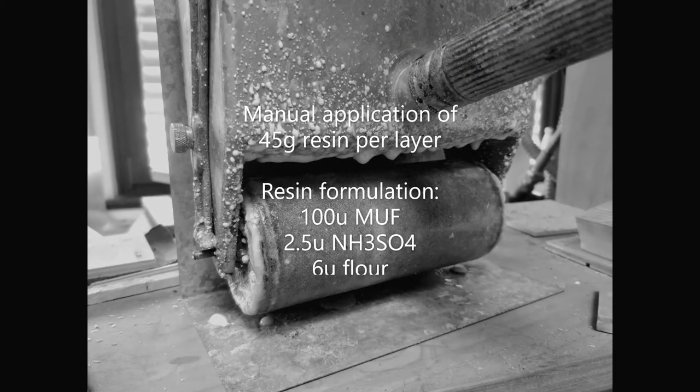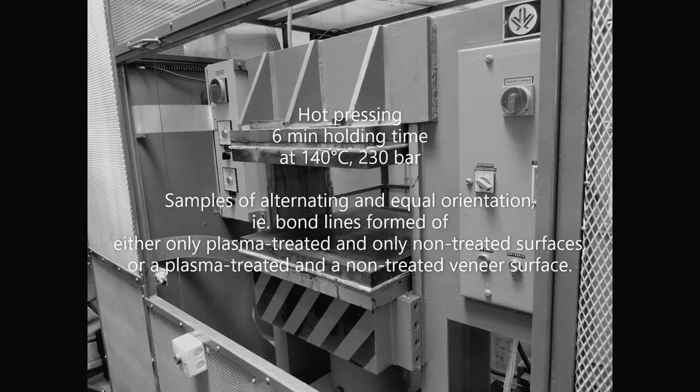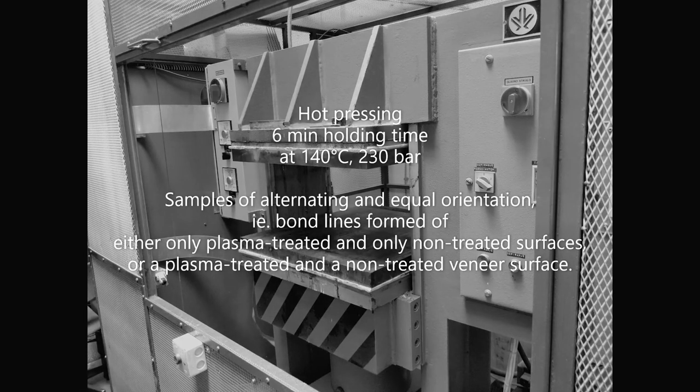45 grams of resin per layer were manually applied. The plywood was formed with a 6-minute holding time at 140 degrees and 230 bars.